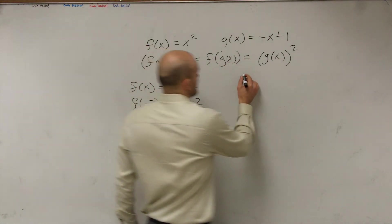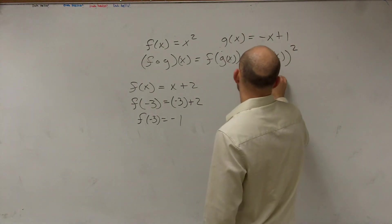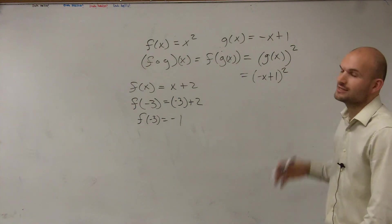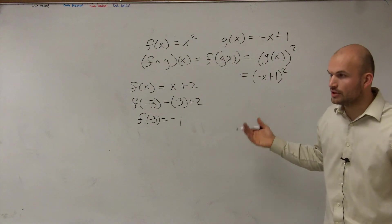Yeah. So now I have g of x. Well, what does g of x represent? Negative x. Negative x plus 1 squared. So how do you do that? And please do not tell me it's negative x squared plus 1 squared. This is a binomial squared, so we need to FOIL.